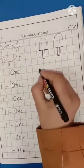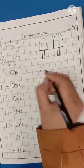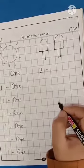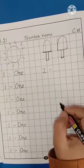Now, write down number 2. Now, we will write the number name of the number 2.